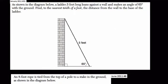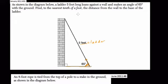In the diagram below, a ladder five feet long leans against the wall and makes an angle of 65 degrees with the ground. Here you have the ground, this is the ladder, they form this angle of 65 degrees. The ladder is five feet long. They want us to find the distance from the wall to the base of the ladder.